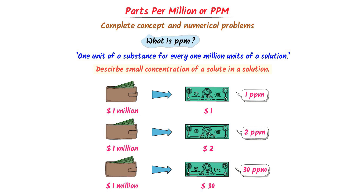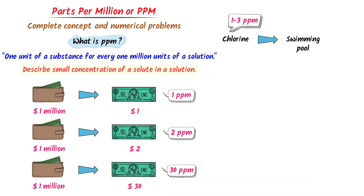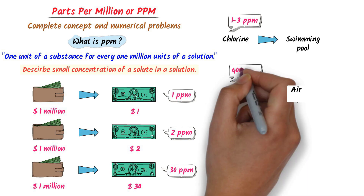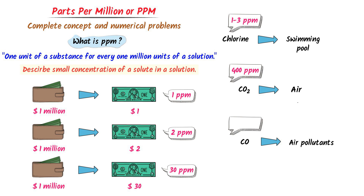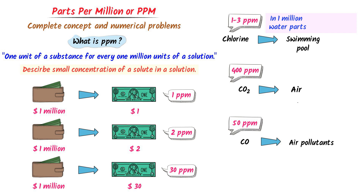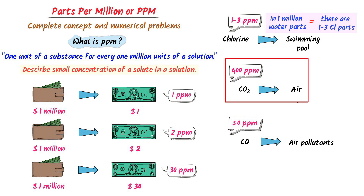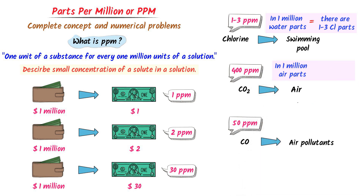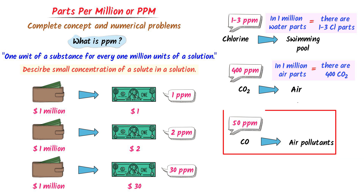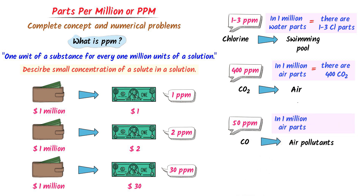Some other examples of ppm: chlorine in a swimming pool is one to three ppm, carbon dioxide in the air is four hundred ppm, and air pollutants in the city air is fifty ppm of carbon monoxide. Chlorine in a swimming pool at one to three ppm means out of every million parts of water, one to three parts of chlorine are present. Carbon dioxide at four hundred ppm means for every million molecules of air, about four hundred molecules of CO₂ are present. Fifty ppm of carbon monoxide means there are fifty molecules of carbon monoxide in every one million molecules of air.